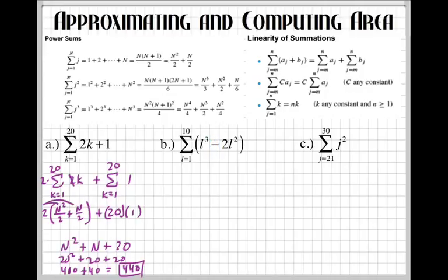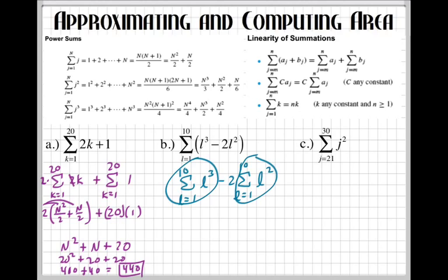Alright, this next one, we have a minus, and there's a 2 right there. So I'm going to factor that negative 2 out of this at the same time as splitting this up. So I'm going to have the summation as l, l equals 1, and we're going to 10. This first one is going to be l to the third. And we're going to have a minus 2, summation l equals 1 raised to 10, l to the second power. So I factored out that negative 2, and I ended up writing the summations twice, so I can split this up. This has a formula, and this one right here has a formula in our power sums.